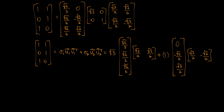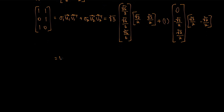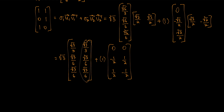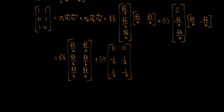So then we multiply these matrices and we get √3 times the matrix with entries √3/3, √3/6, √3/6, √3/3, √3/6, √3/6, plus 1 times the matrix 0, 0, 0, −1/2, 1/2, 1/2, −1/2. Notice that the columns repeat within each matrix, so each matrix has rank 1. So we've rewritten our matrix A as a linear combination of rank-1 matrices.